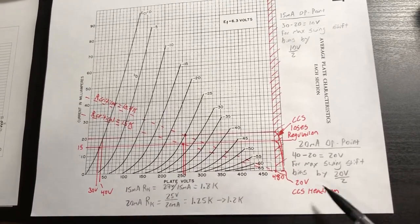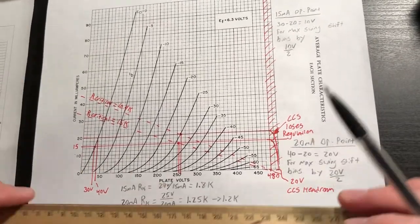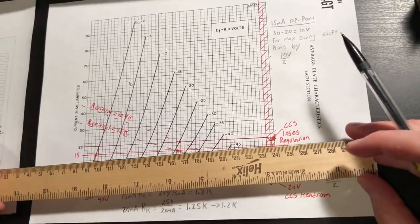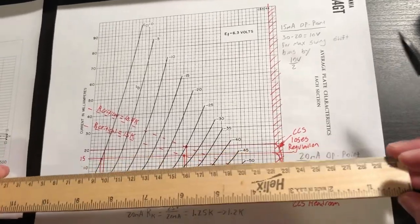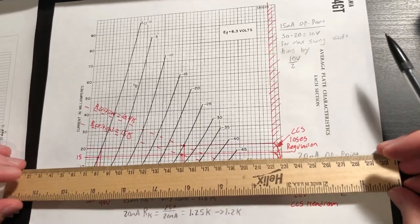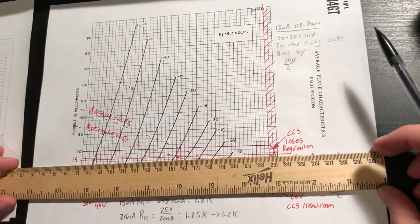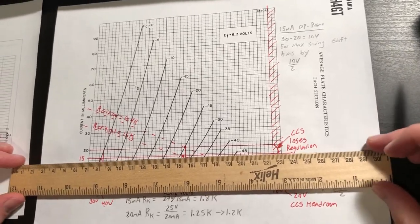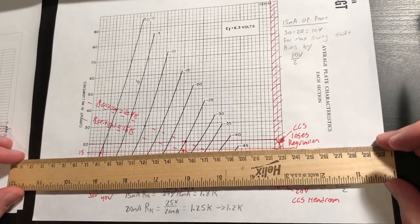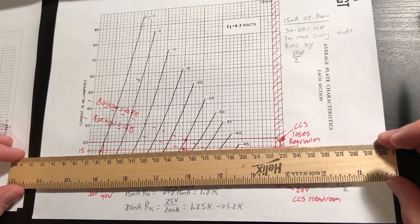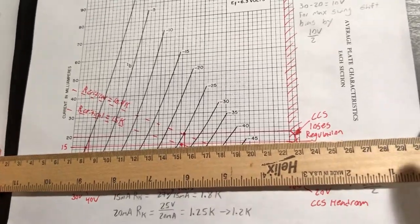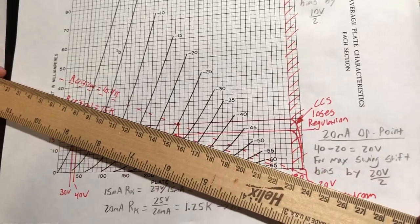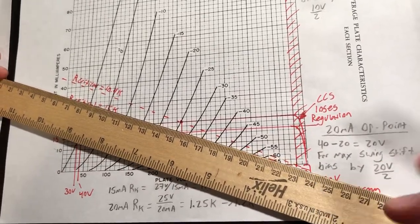As we also discussed with constant current sources, and this is less of a phenomenon or less of a consideration with this gain stage because it's going to be loaded by our driver or cathode follower, which will present a really high impedance. But I did want to document here that for each bias point, there's a critical load impedance where we can tolerate rotation of the load line before we run out of signal swing.